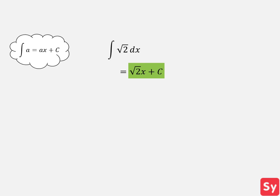Now let's check our answer. We'll take the derivative of the antiderivative. So we take the derivative of the square root of 2 times x plus c, and we get the square root of 2, which is our integrand. That means this answer is right.